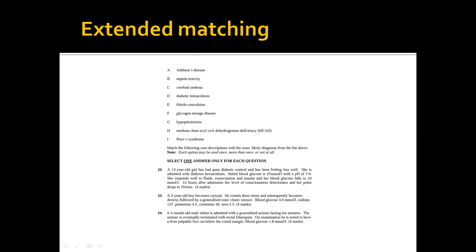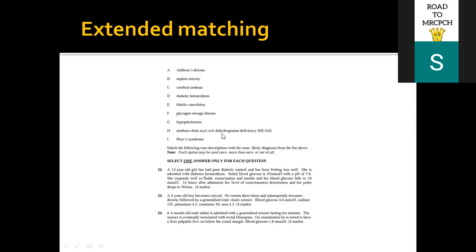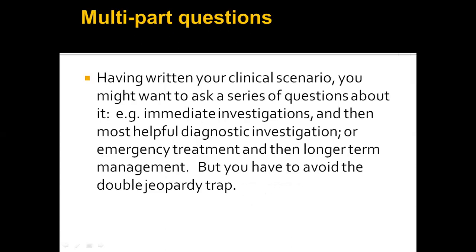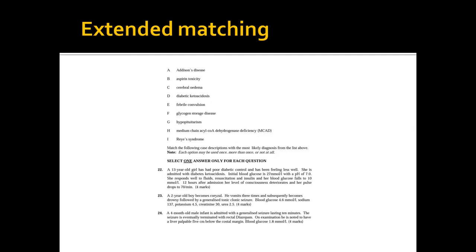For Extended Matching Questions, you are given nine options and three questions below them. You read the scenario for each question and choose one correct answer from the nine options. Each option may be used once, more than once, or not at all. Extended Matching Questions in AKP are the same as in Part One.